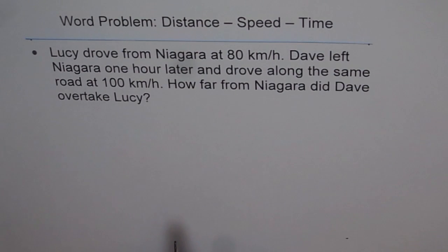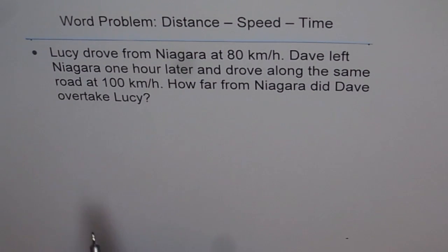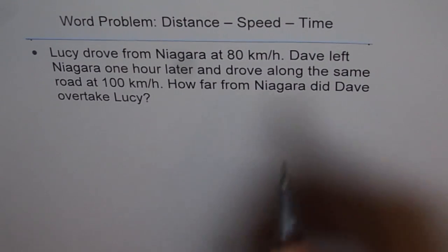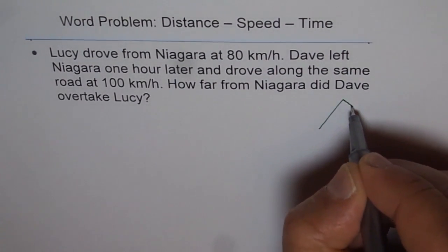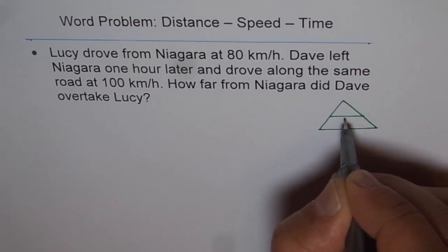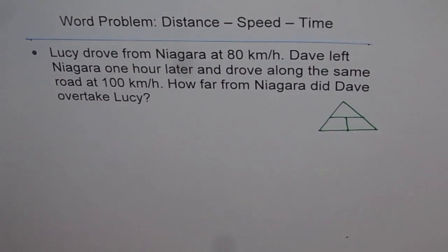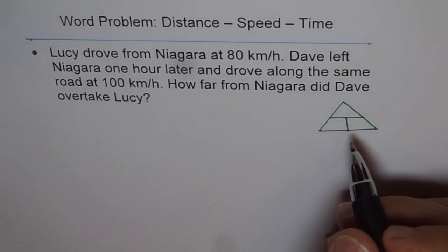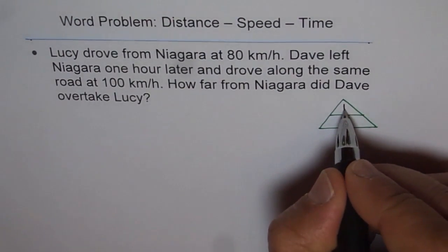In this problem, we have distance, speed, and time. To solve this, we need to know the relation between distance, speed, and time. I'll draw a triangle which represents the relation. This is a very important triangle, and we will use it in almost every question relating distance, speed, and time.